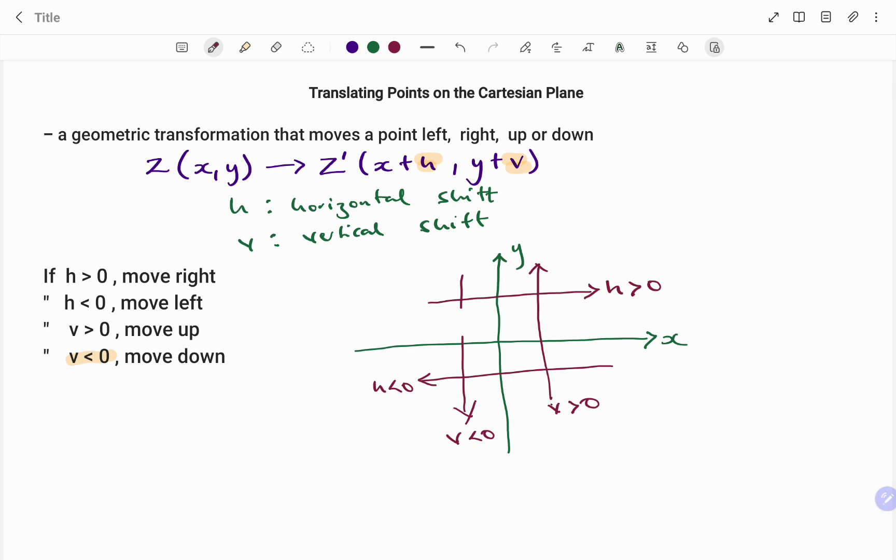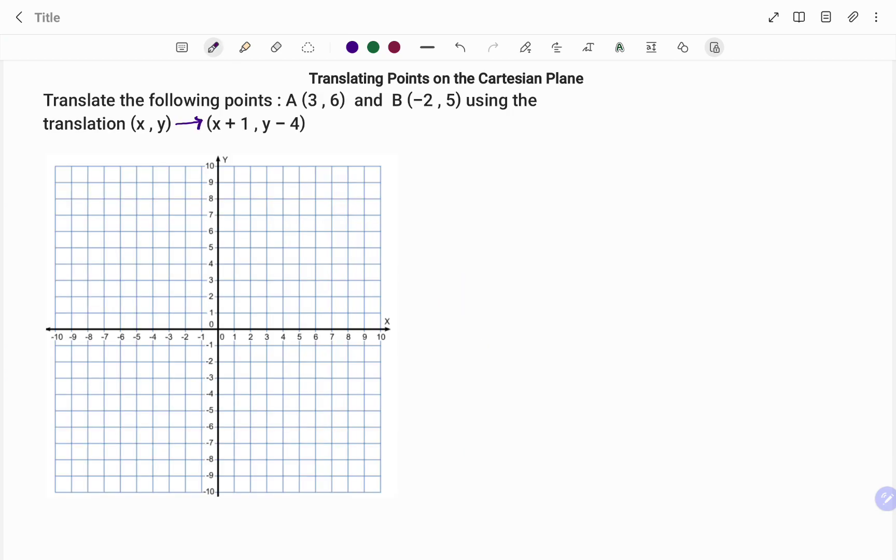The first step is to locate my point on the Cartesian plane. I have point (3, 6), that's 3 units to the right and 6 units upwards on the y axis. I have point A with coordinates (3, 6). And likewise for coordinates B, I have 2 units to the left and 5 units upwards, so I have that as point B, that's (-2, 5).